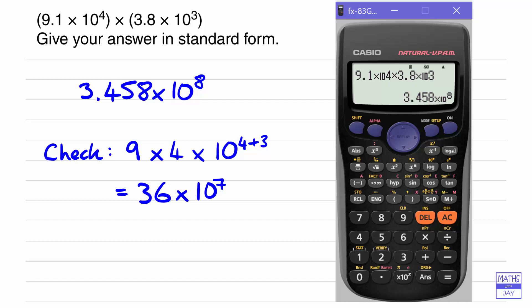So having done that sort of thing you might have thought that the answer was 36 times 10 to the 7 and that would be a way of writing the answer but it wouldn't be in standard form.